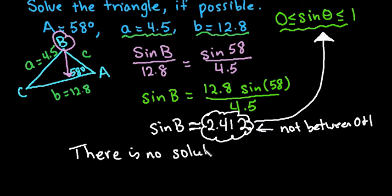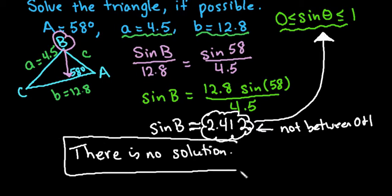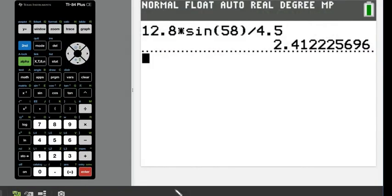So there is no triangle that can be formed with the given information. So sometimes when you are given side, side, and then an angle that is not included between it, you can end up with there not being any solution.